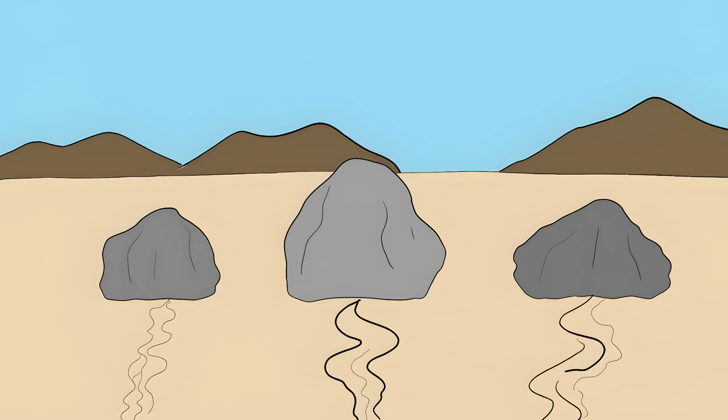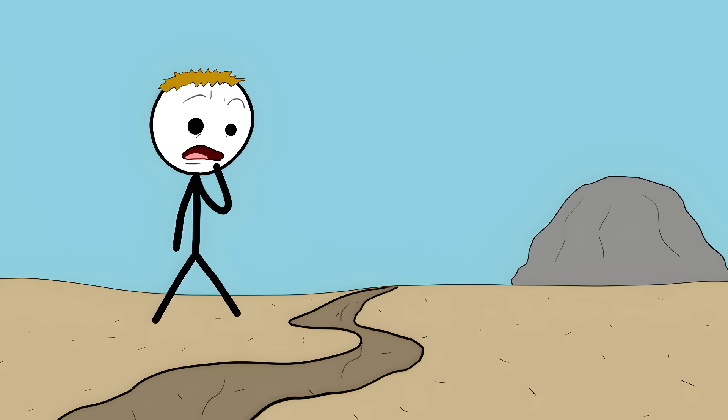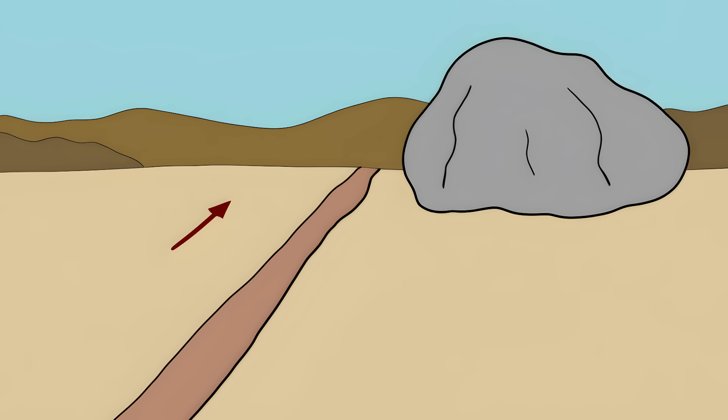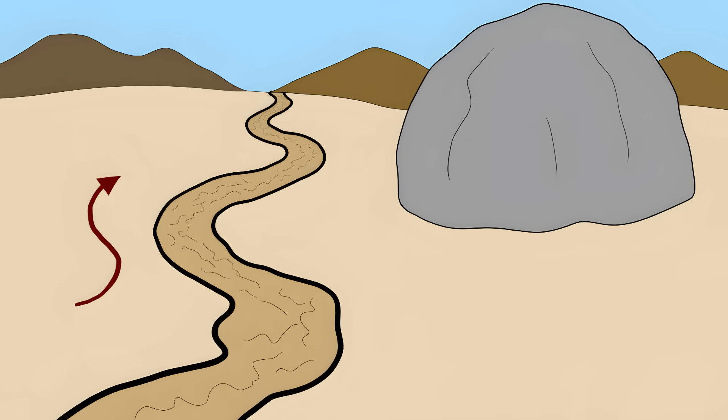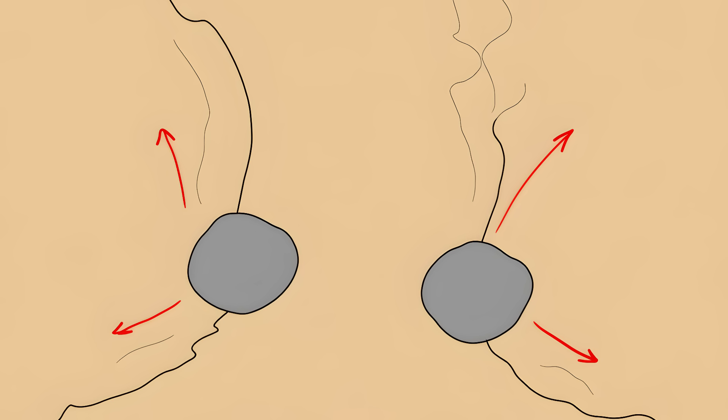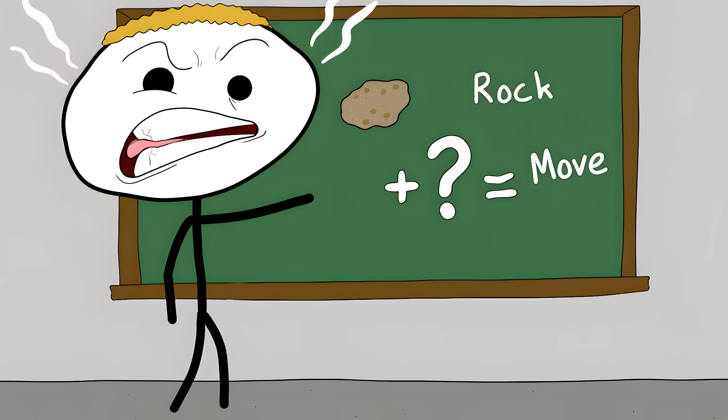Hundreds of rocks, some weighing over 700 pounds, are moving by themselves. They leave tracks hundreds of feet long in the dried mud. Some tracks are straight, others zigzag. Some rocks even travel together then suddenly split up. For decades this drove scientists insane. Theories ranged from aliens to powerful magnetic fields.